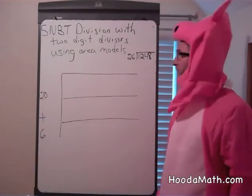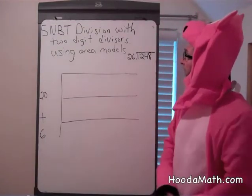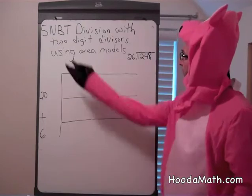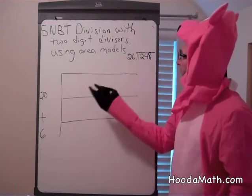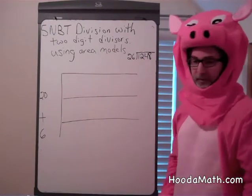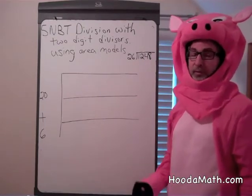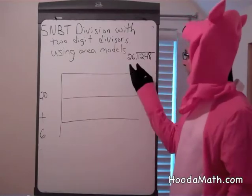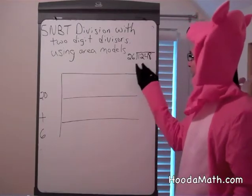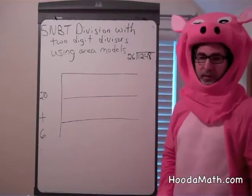In today's lesson, we're going to be talking about division with two-digit divisors using area models. In this case, we're going to divide by a two-digit number, 26, into 1,248.